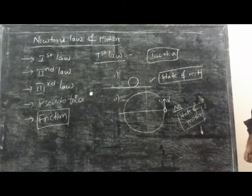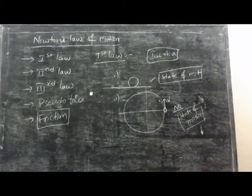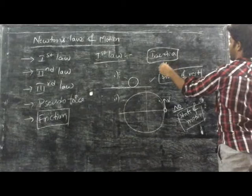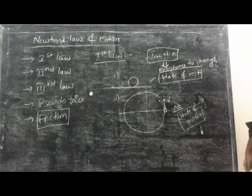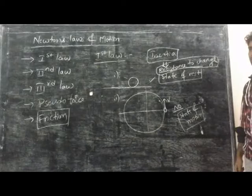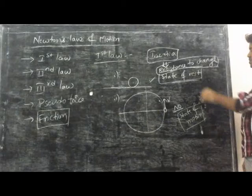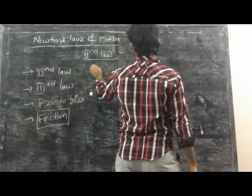The state of motion — we can state this as resistance to change. It will oppose any change in the body, which is nothing but: the body is willing to remain in a state of rest or in a state of motion. This property is called inertia.